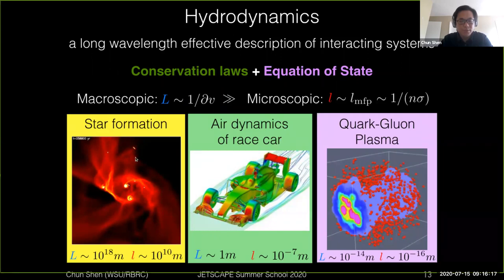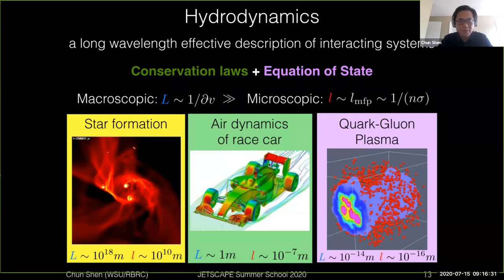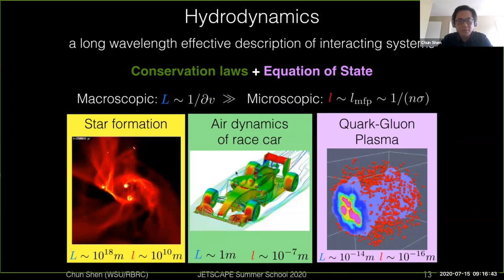In that case, hydrodynamic simulation works extremely well to describe the microscopic evolutions of the systems. The same thing applies if you want to model the aerodynamics of a race car in daily life - the object is on the order of a few meters while the interaction between air molecules is about 10 to the minus seven, so with this separation of scales hydrodynamics also works very well.